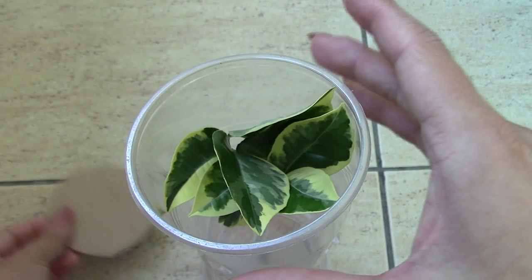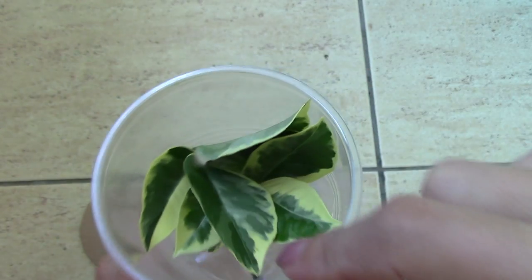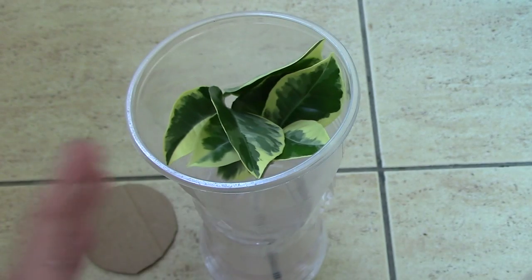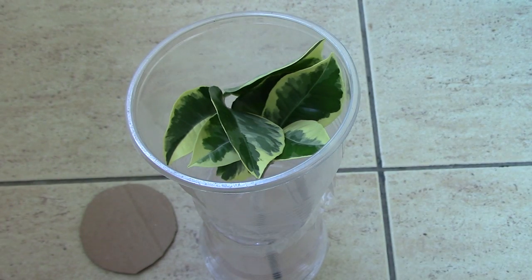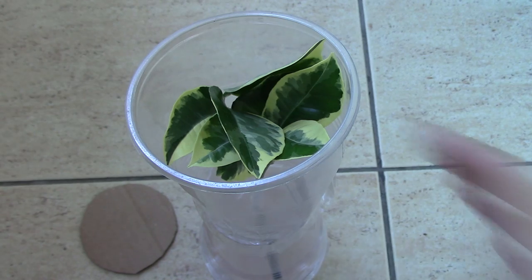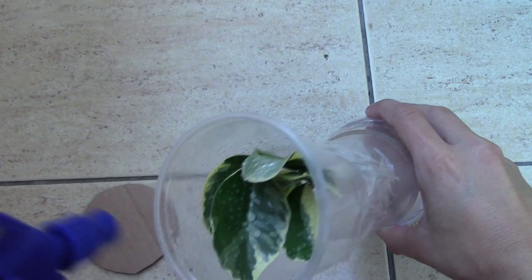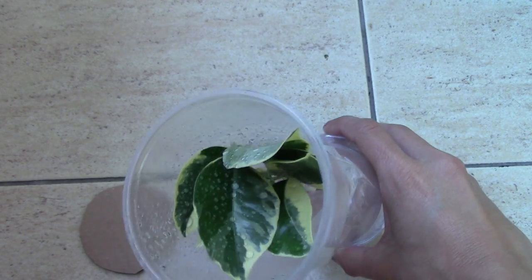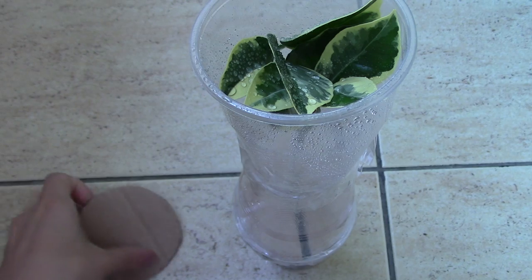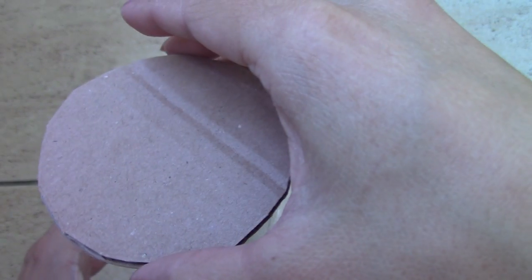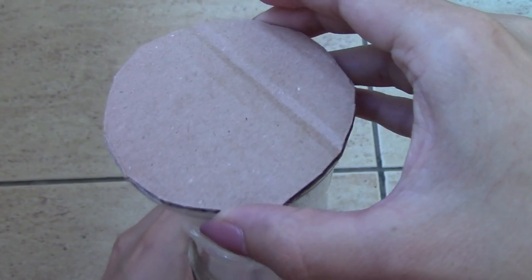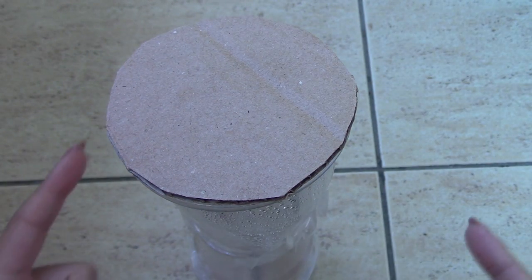If everything is okay, the next step is very important. Do not forget to spray your plant with water so the plant has some humidity in there. Take a sprayer and spray a little with water, then take our cardboard circle.